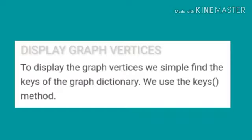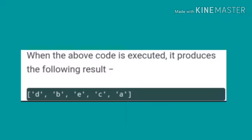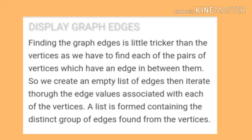Display graph vertices. To display the graph vertices, we simply find the keys of the graph dictionary. We use the keys method. Here is the class graph. Get the keys of the dictionary. Create a dictionary with the graph elements. When the above code is executed, it produces the following result.